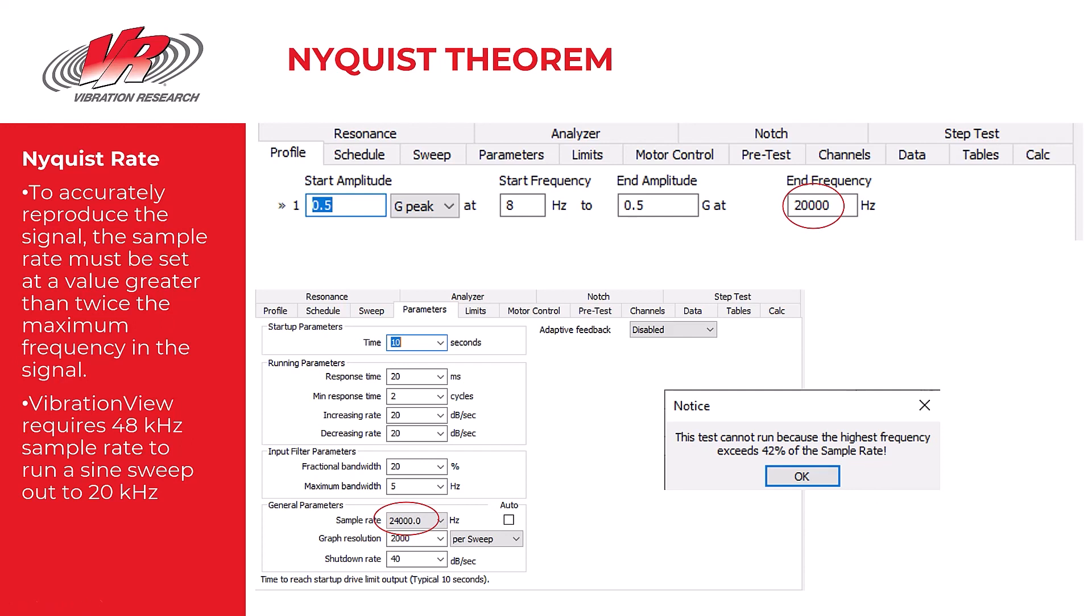So I needed to pick a sample rate far greater than 24,000 and I needed to pick a sample rate of 48,000. 48,000 sample rate would work on the Vibration Research software.